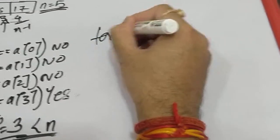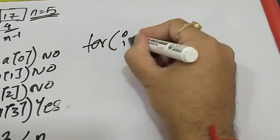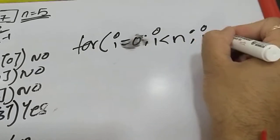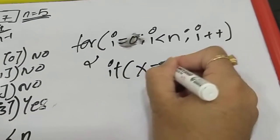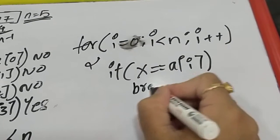We will write: for (i = 0; i < n; i++). If x becomes equal to the ith element of the array, we will simply break.